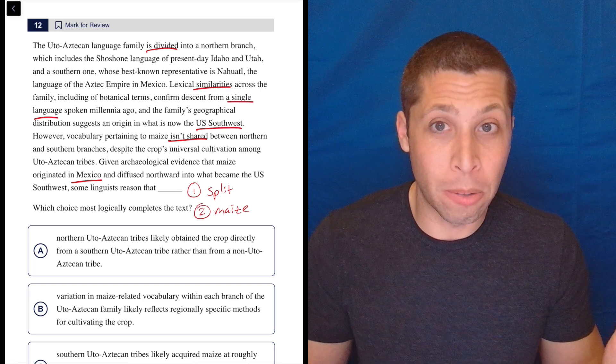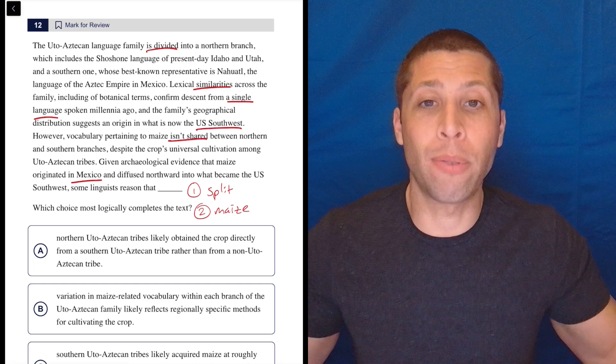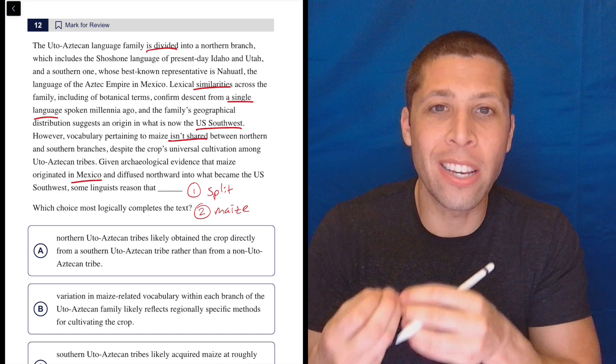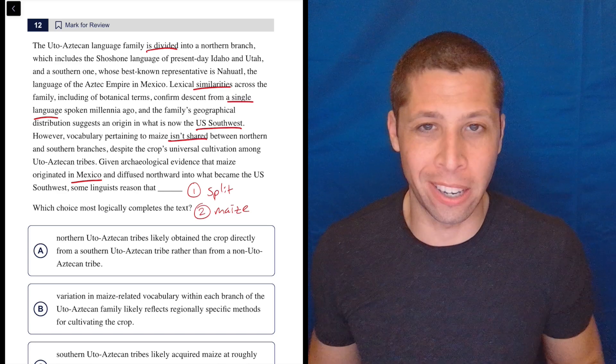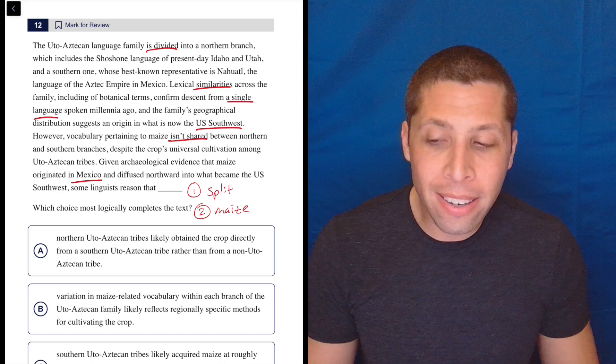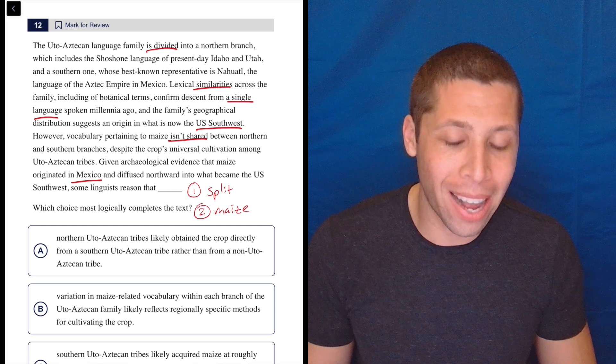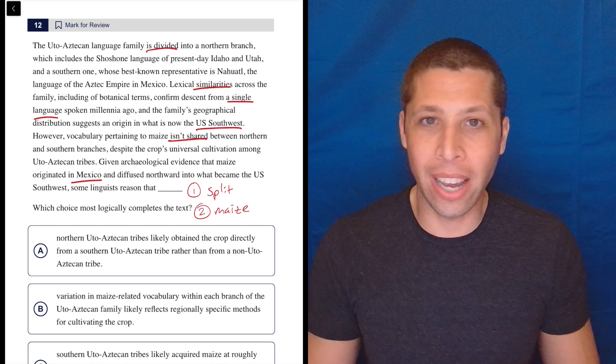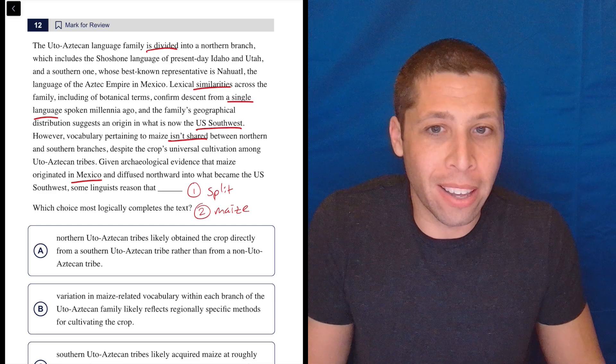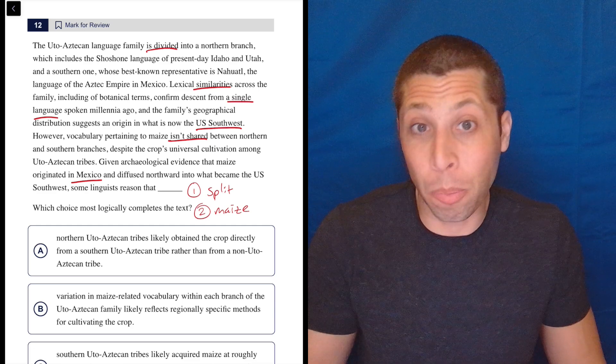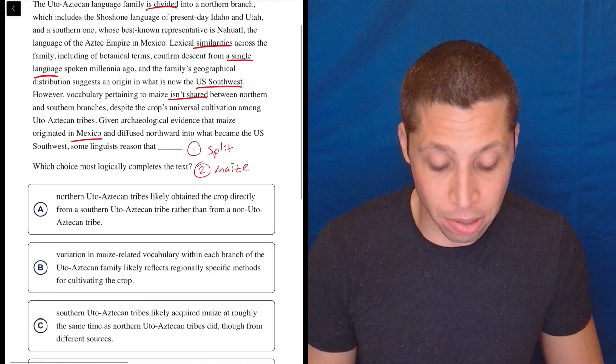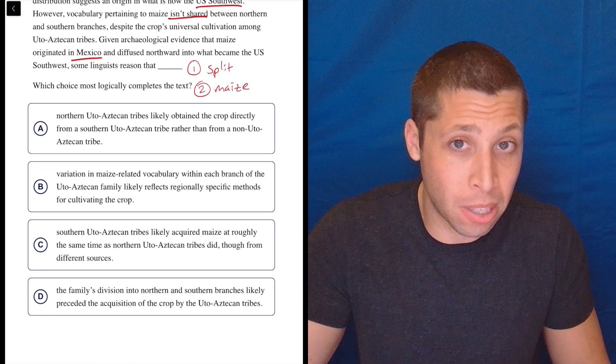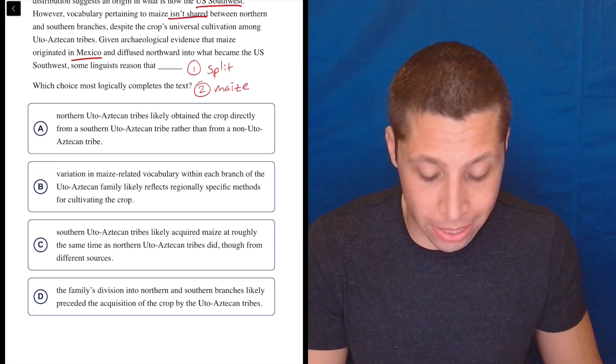Right? So why would they have different words? Because they'd already separated languages. And so they don't have the same word for maize because they didn't know what maize was when they were an original language. They're not saying that in the passage, but I don't know. That just feels obvious to me. It's just a logical thing that follows from this. But maybe it's just practice with these that gets you good at that. So I would be looking for that in the answer choices. Now, you don't have to have that specific of an idea. We could still do process elimination.